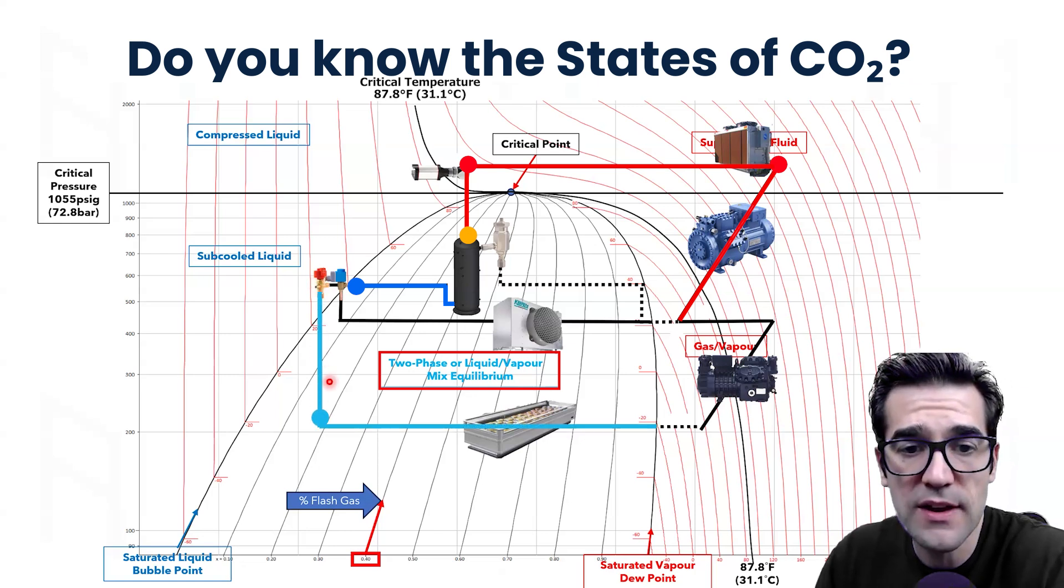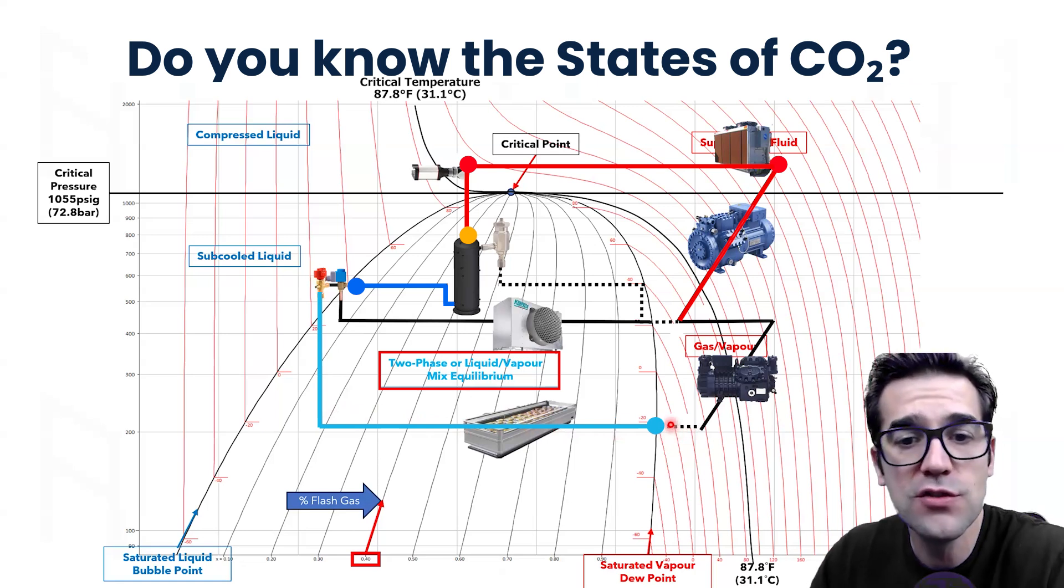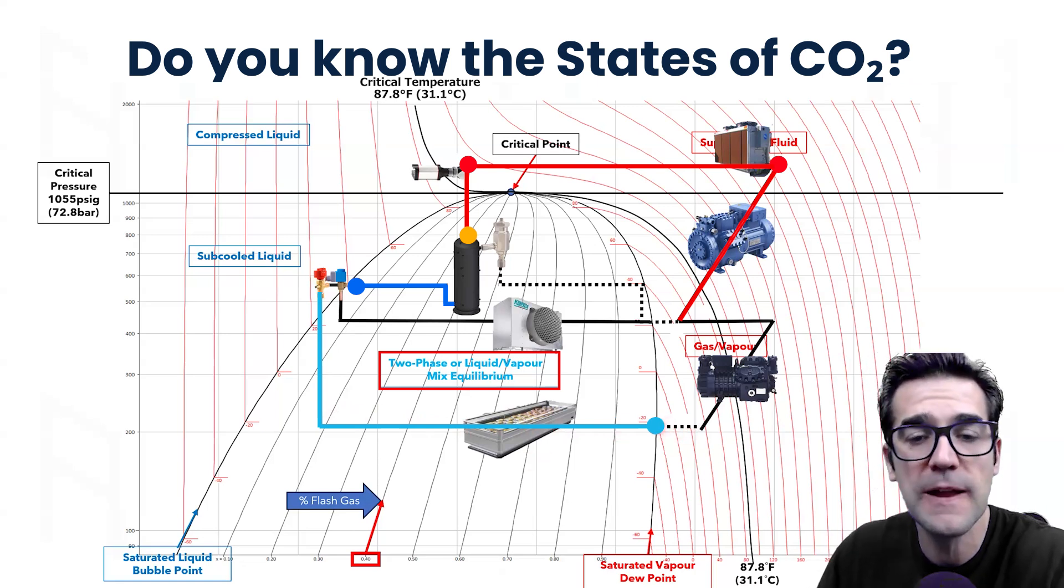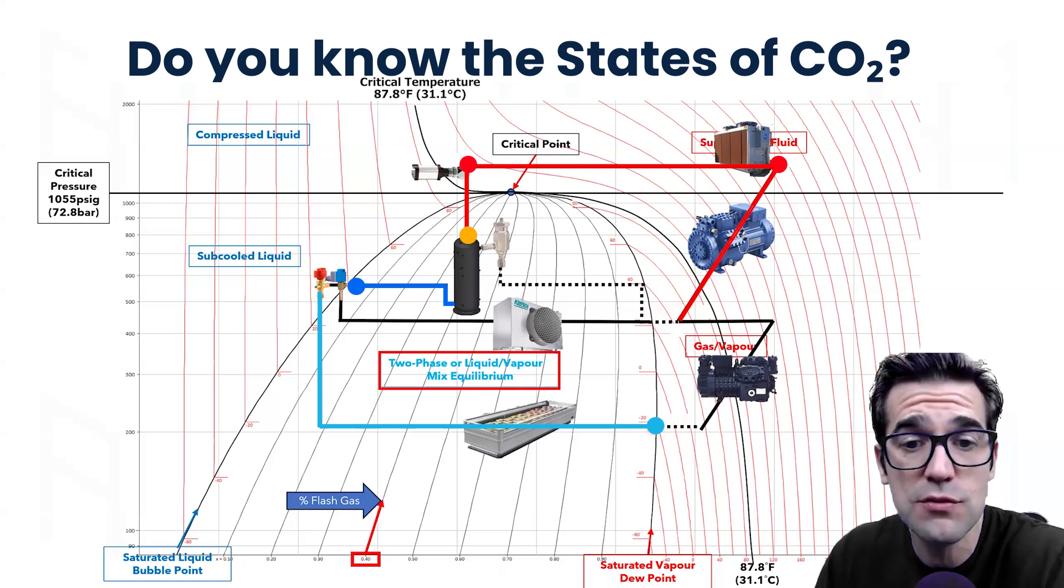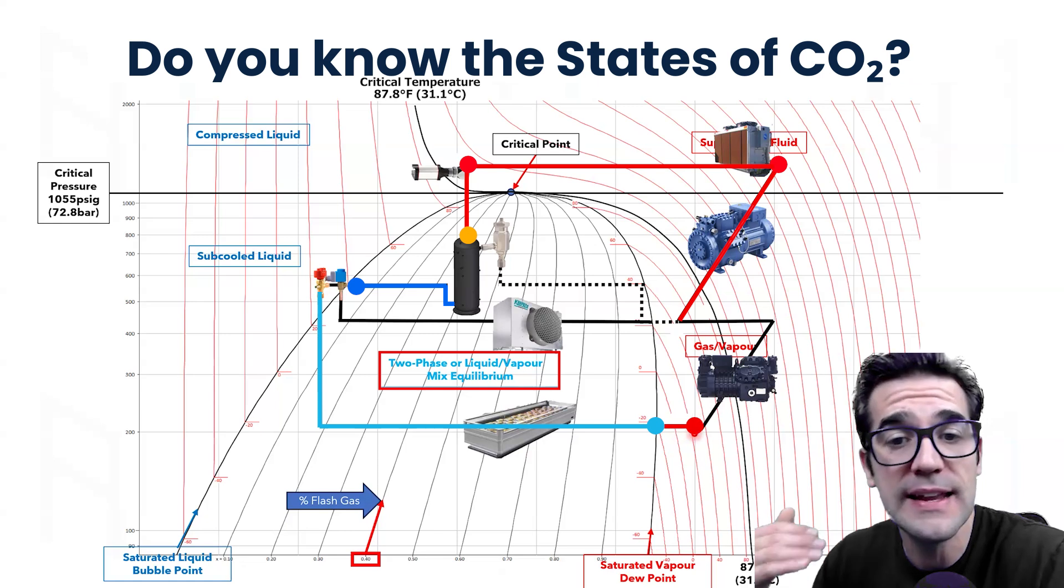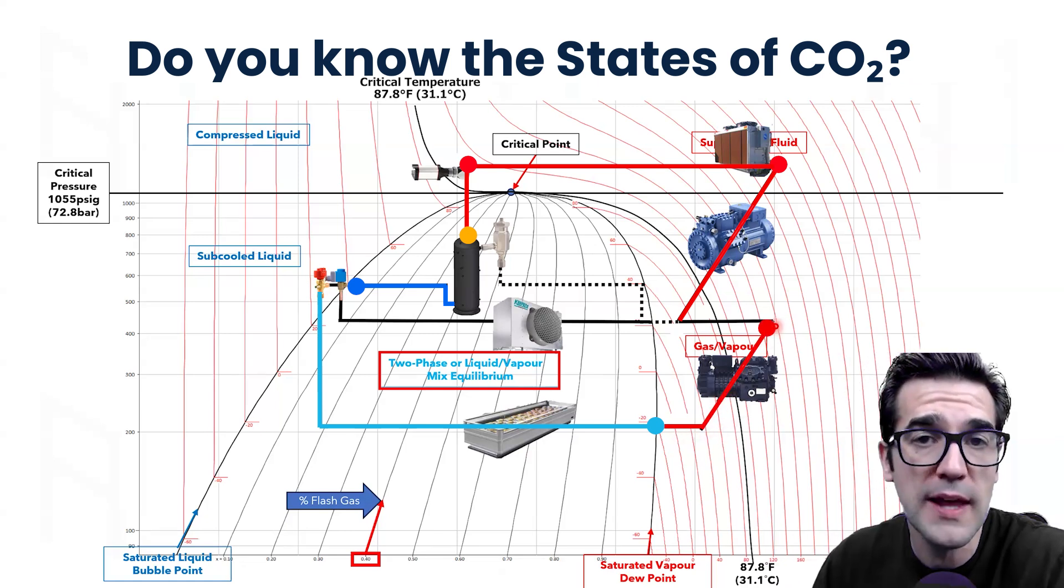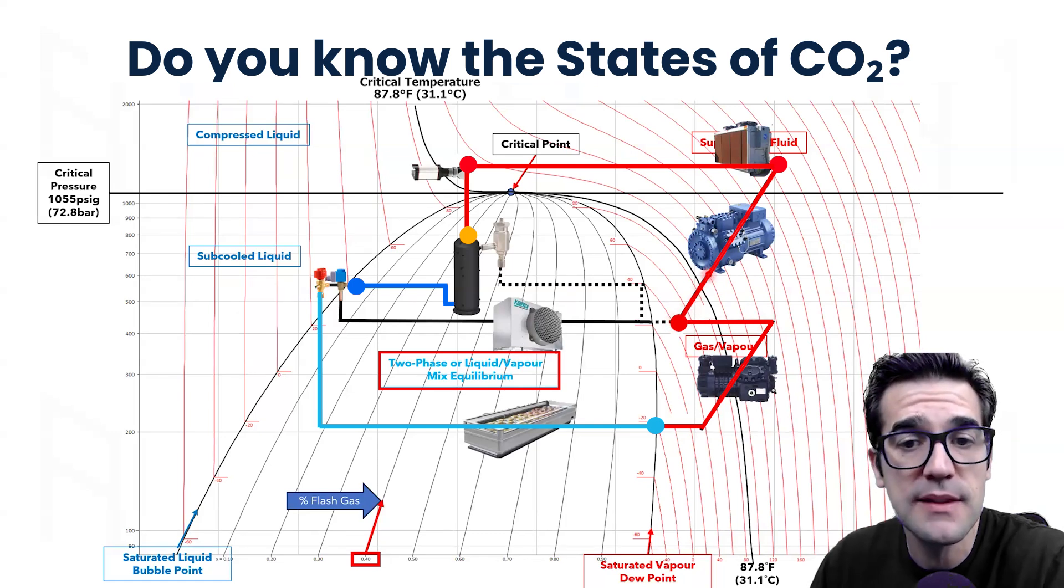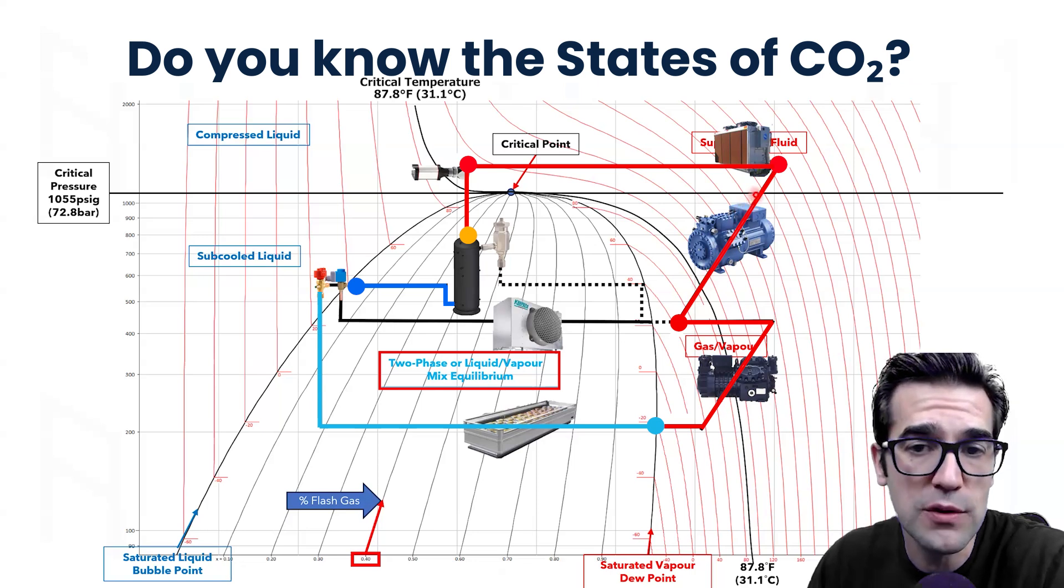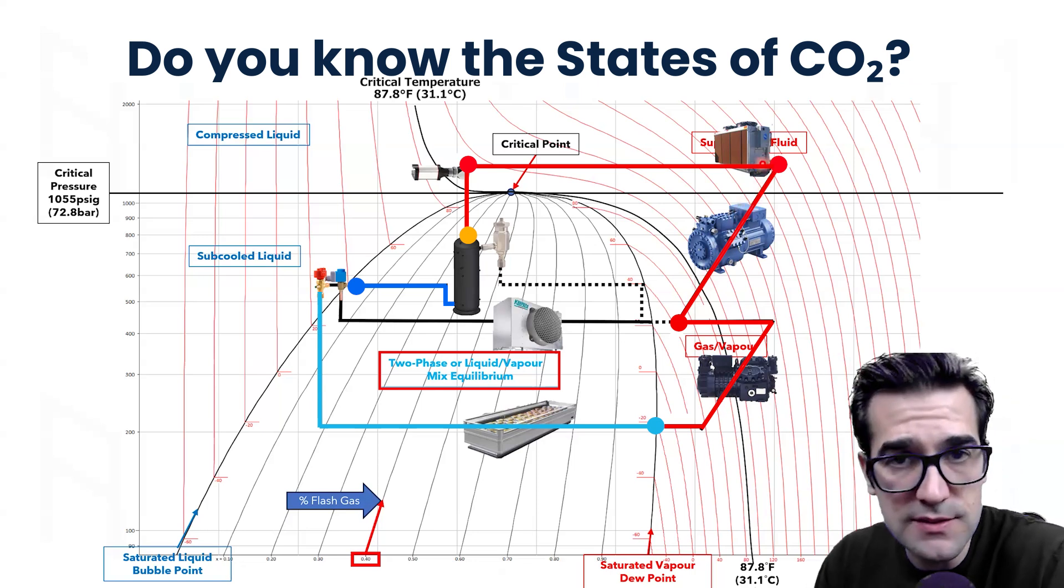As we go down and across, then we get back over to our saturated vapor or dew point line. So we make sure we do not have wet gas going back to each of the compressors. We need to have superheat going back to them. Now we're back into that gas vapor CO2 as we travel through the low temp booster compressor. And then we are a supercritical fluid leaving that compressor up to the gas cooler. This is how it's done.